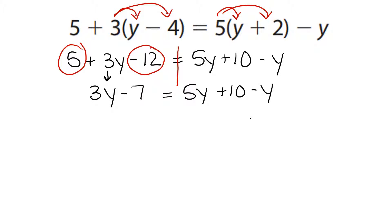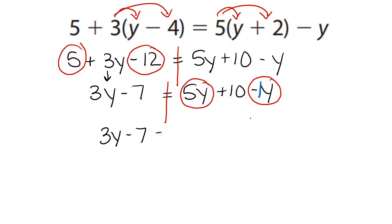5y minus y. On the right-hand side, we have 5y plus 10 minus y. The 5y minus y are like terms because they have the same variable. This minus y does not have a number in front of it, but when that happens, we know that it is an understood 1. I bring down the 3y minus 7. I solve 5 minus 1 to get 4, and I bring down the plus 10.